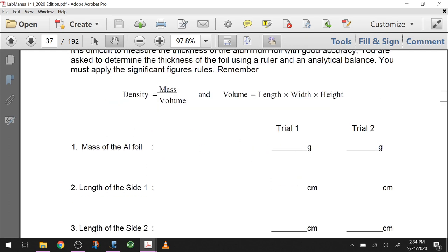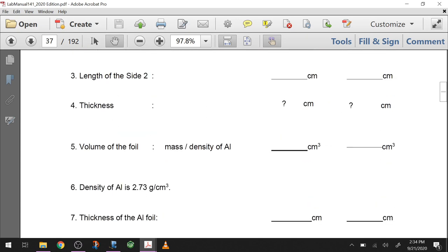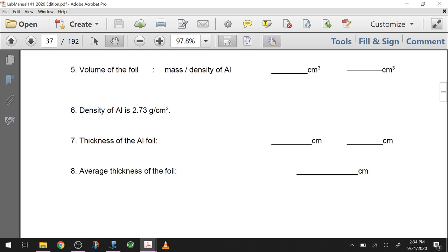You're going to have two sets of data here, two trials. We're going to provide those for you. Take each of them separately, and then at the end you average the number. That's the last thing you do here—average the two thicknesses you calculated from the other two trials. Here's the density of aluminum that you're going to need to actually solve this.